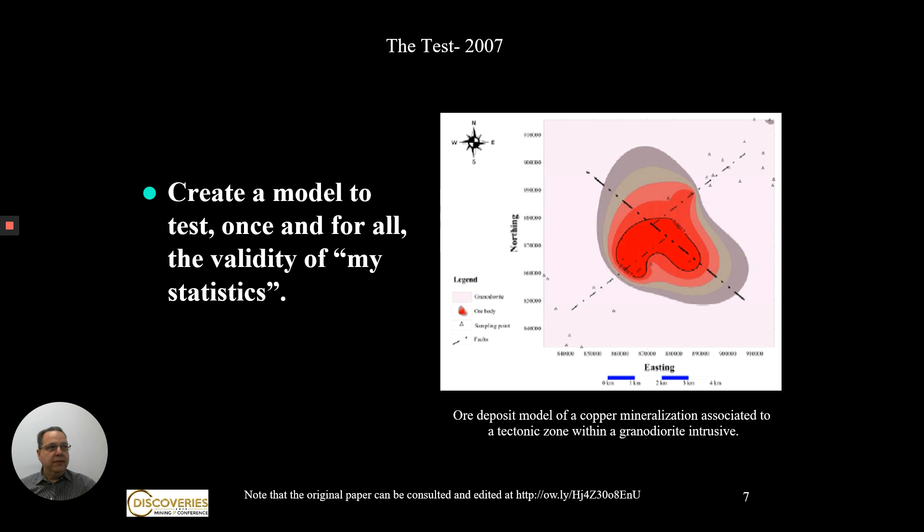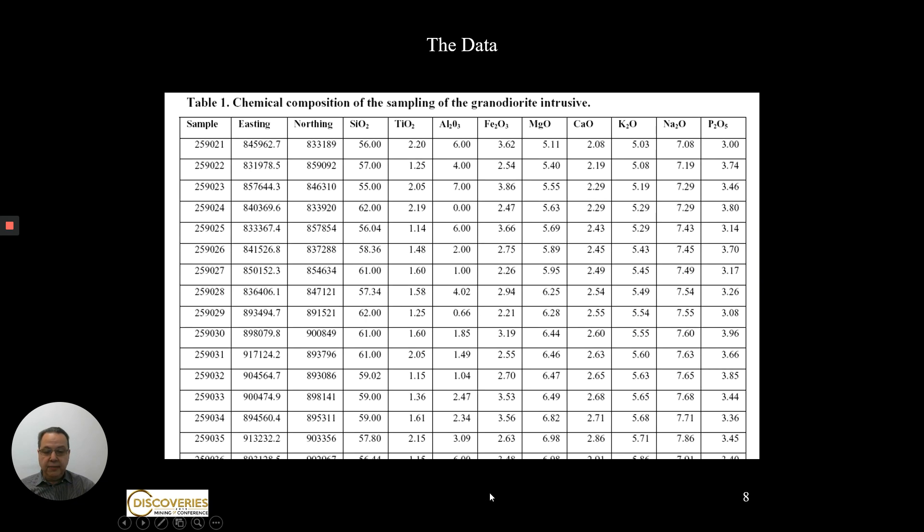I decided to test their statistics and my statistics. So I created a model of copper mineralization in a porphyritic environment. The original paper can be downloaded from Wikipedia. There is a link at the bottom of the slide. This is how the data looks like.